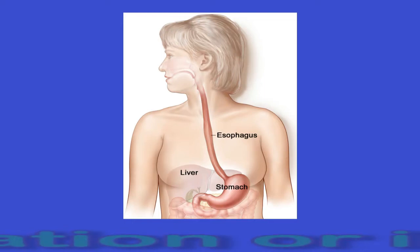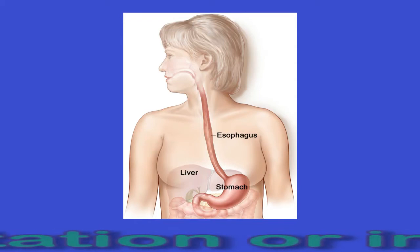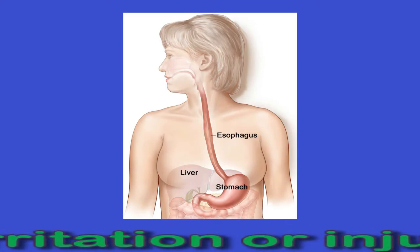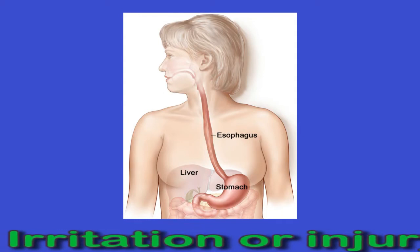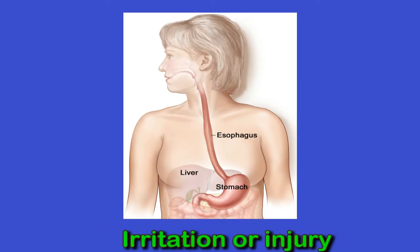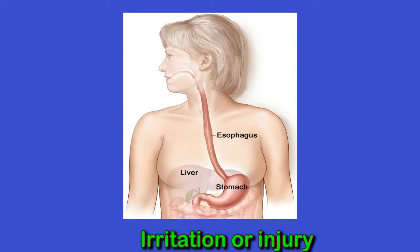Causes: a number of health conditions can cause pain in the chest when swallowing, including irritation or injury. Sometimes the tube that connects the mouth to the stomach — the esophagus — becomes inflamed or damaged, causing pain when swallowing. Some causes include swallowing food that is too hot, sharp, or large; swallowing a foreign object; frequent vomiting due to medical conditions, pregnancy, or eating disorders such as bulimia; infections such as thrush or herpes simplex virus; and ingesting an irritating chemical.